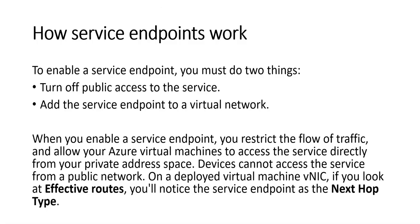So how do service endpoints work? To enable a service endpoint you must do two things: turn off public access to the service, and add the service endpoint to the virtual network. When you enable a service endpoint, we restrict the flow of traffic and allow Azure virtual machines to access the service directly from the private address space.